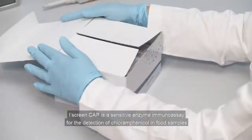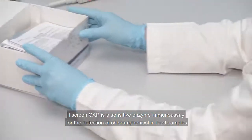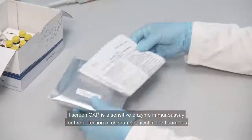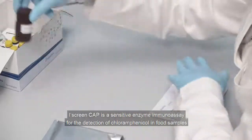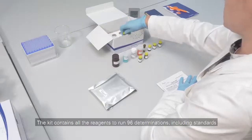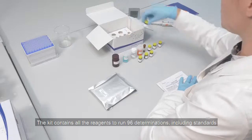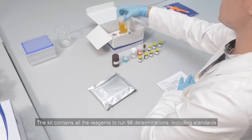I-screen CAP is a sensitive enzyme immunoassay for the detection of chloramphenicol in food samples. The kit contains all the reagents to run 96 determinations, including standards.